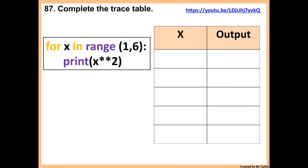In this question we need to complete this trace table. We have a for loop: for x in range from 1 to 6. Firstly, x starts with 1, then it says print x exponent 2. x exponent 2 means x to the power of 2, so 1 to the power of 2 will give us 1.